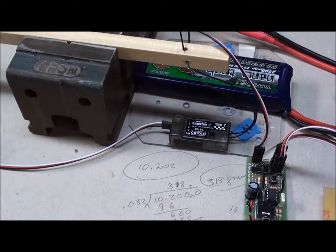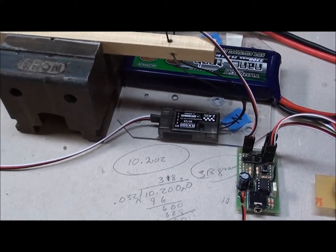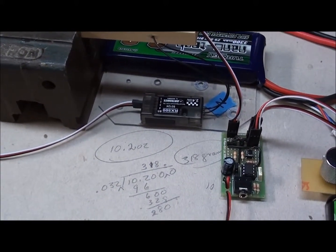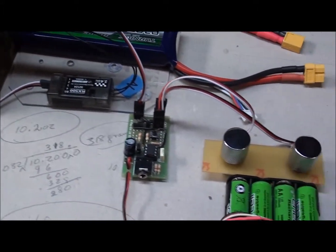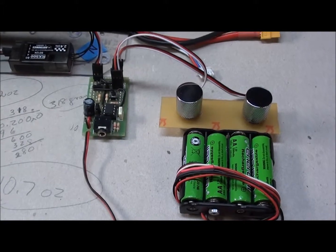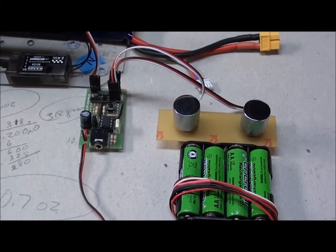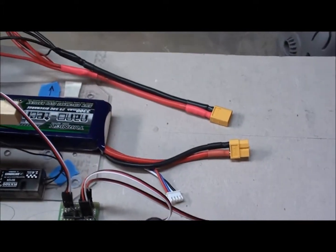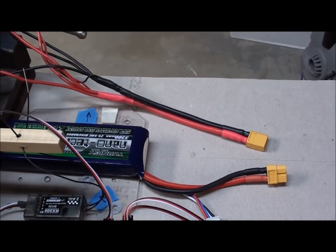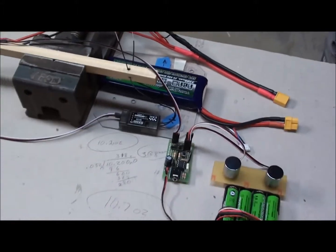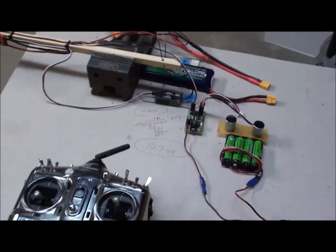The ESC is plugged into the channel 3 throttle channel on the receiver, and this little gadget here is my handy-dandy servo cycler and tester. There's the battery and wiring harness, and the whole thing is